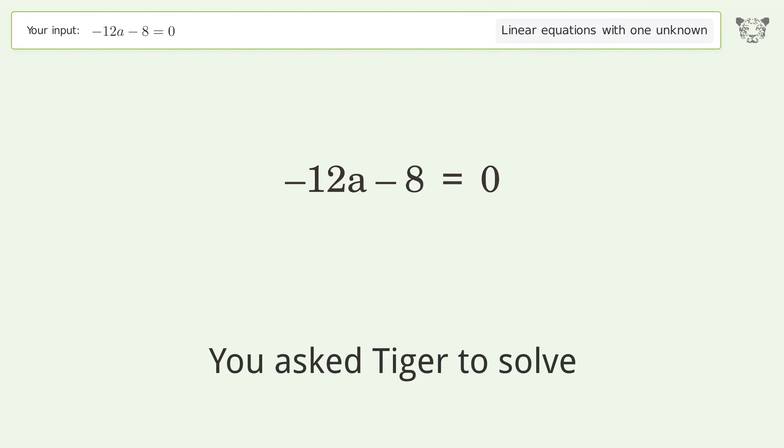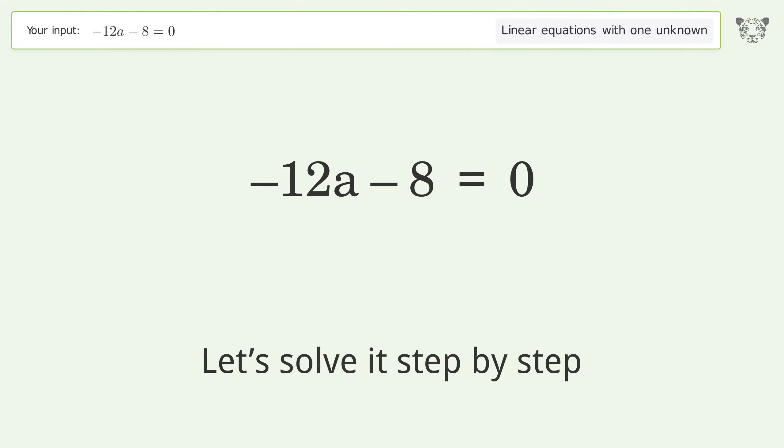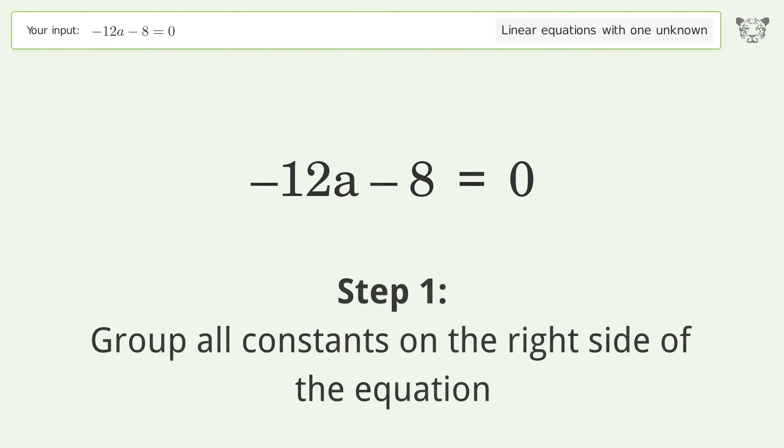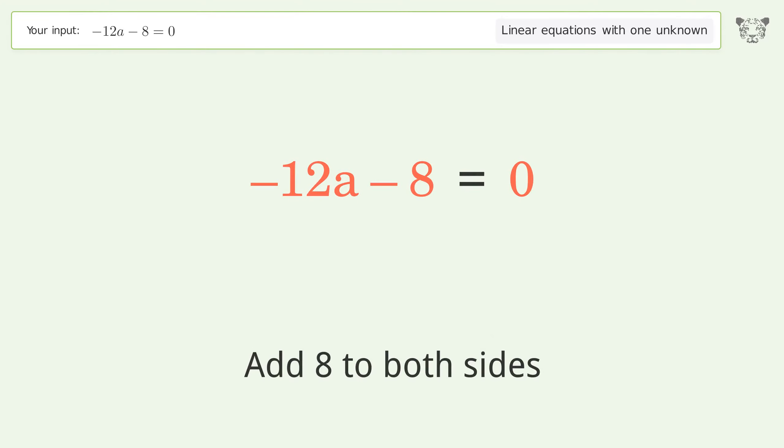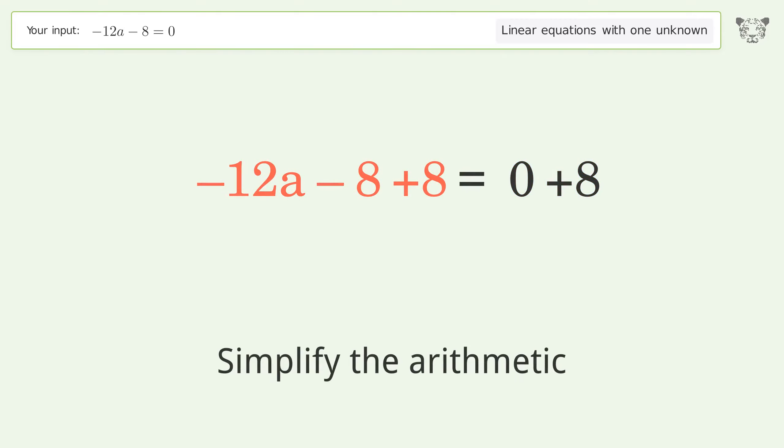You asked Tiger to solve this. It deals with linear equations with one unknown. The final result is a equals negative 2 over 3. Let's solve it step by step. Group all constants on the right side of the equation. Add 8 to both sides, simplify the arithmetic.